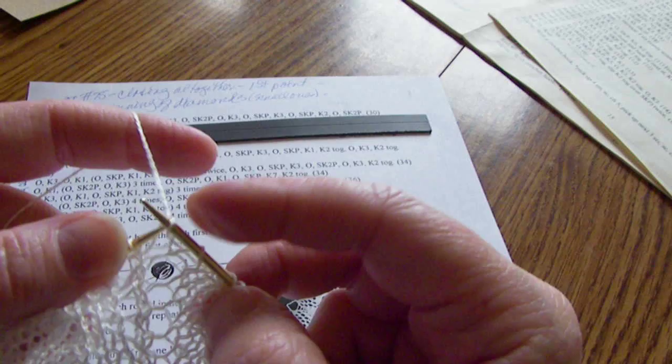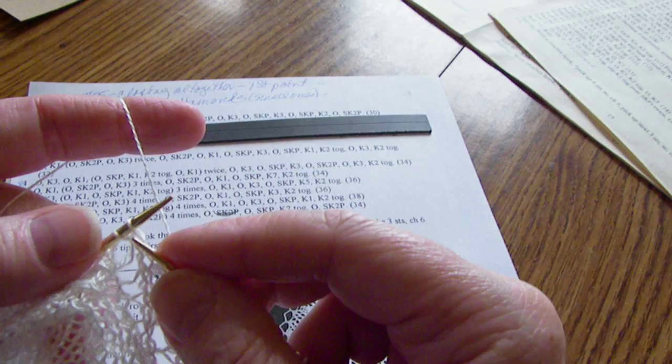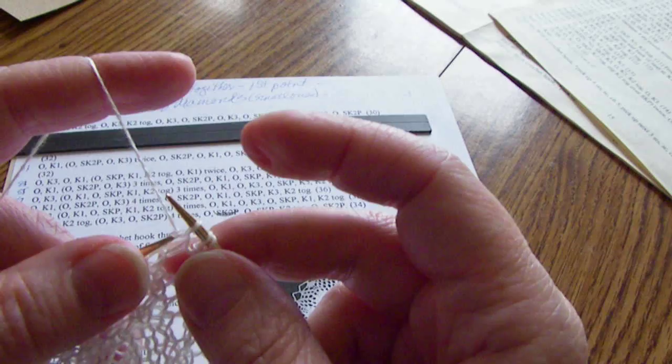Okay so then we knit two and then here we do our slip knit two together and that creates the loop for our other point.